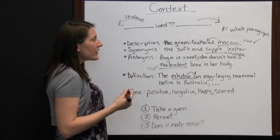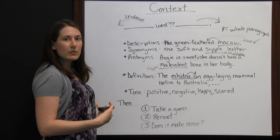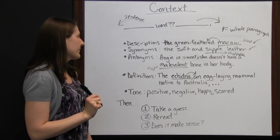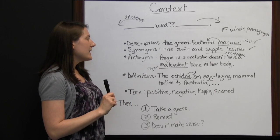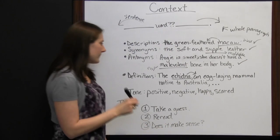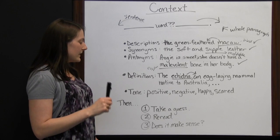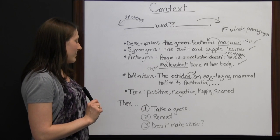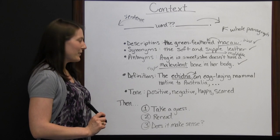For 'the soft and supple leather,' if we know it means something like moldable, we could say 'the soft and moldable leather' or 'the soft and flexible leather' — any similar word to soft would work. For 'malevolent,' thinking evil — 'Angie is sweet, she doesn't have an evil bone in her body' — that makes sense. For echidna, if a definition is provided in the text, you simply use it: 'an egg-laying mammal native to Australia.' There's not really a synonym for echidna you could substitute.